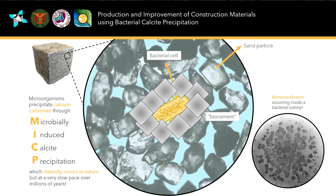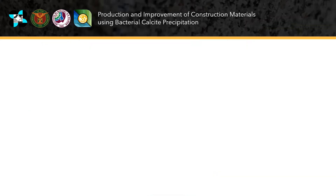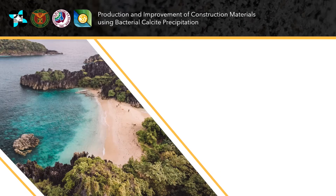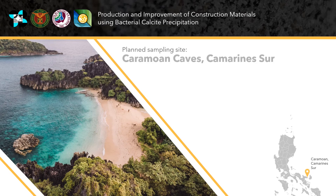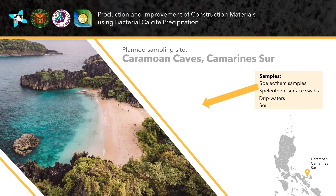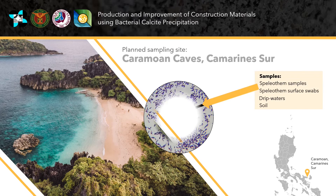This activity naturally occurs in nature over millions of years. We will try to harness this process and produce bacterial bricks in a very short time. It is best to isolate bacteria from a good source, such as the limestone caves of Karamoan. Samples of sediment, water, and stone will be gathered, and microorganisms growing on them will be cultured.